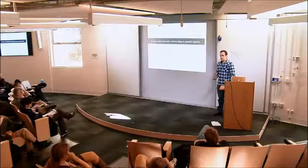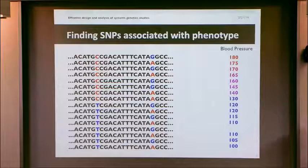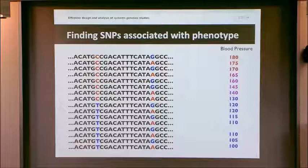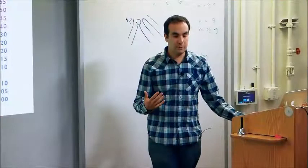The standard approach that people use to try to find variants associated with traits is the standard association study. You take a bunch of individuals — here's a toy example where each row is an individual — a few of the positions differ, and what you do is you correlate the genetic variation with the trait to try to identify locations that are correlated, because those might be variants involved in the trait.